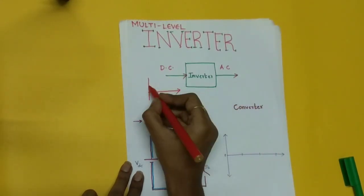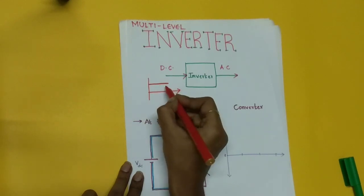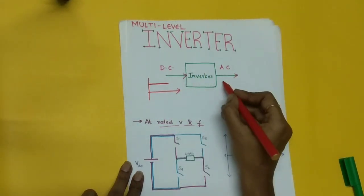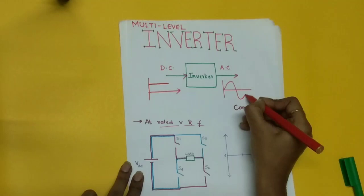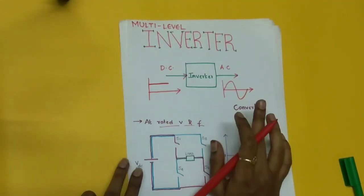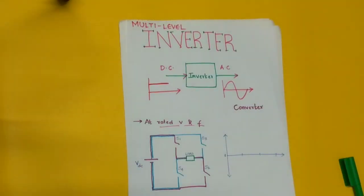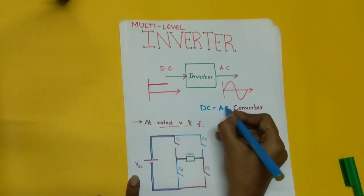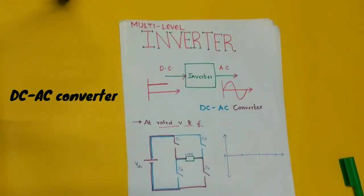If I am giving a DC voltage — that is, a unidirectional voltage — at the input to the inverter circuit, then I will be getting a sinusoidal waveform at the output in the ideal case. A sinusoidal waveform is what we use in our day-to-day life. Basically, this inverter is called a DC to AC converter. Practically, it is very difficult to obtain an ideal sinusoidal waveform at the output.